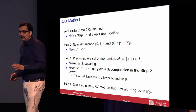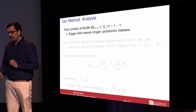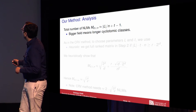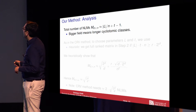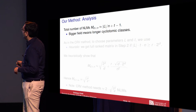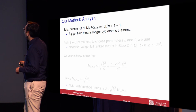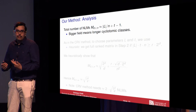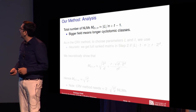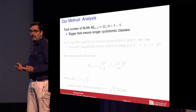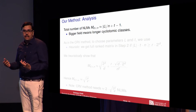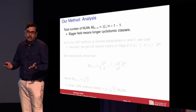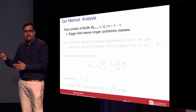That covers the modifications to the CRV method. For the analysis, the number of non-linear multiplications M is given by this expression. We see that the bigger the field we work over, the fewer non-linear multiplications we need to invest in the pre-computation step. But in practice, this comes at a cost because performing field arithmetic in a bigger field becomes more expensive as N grows.